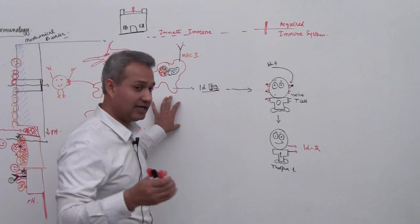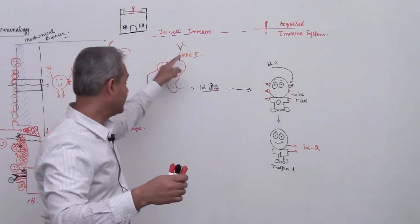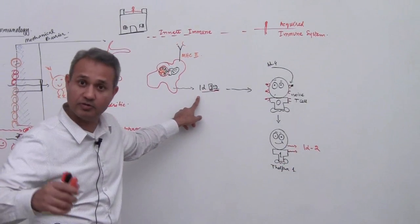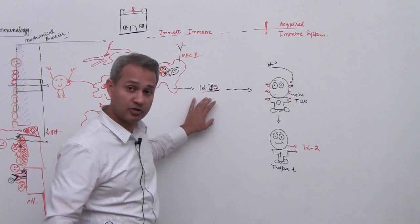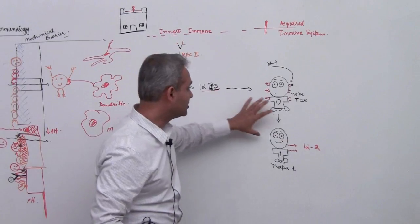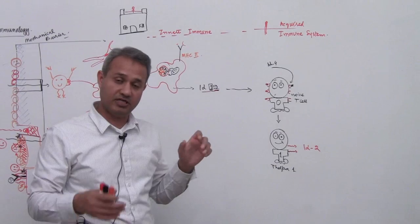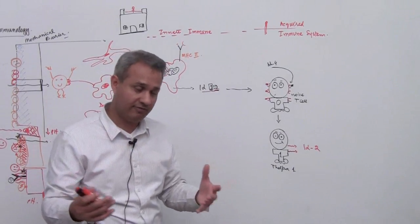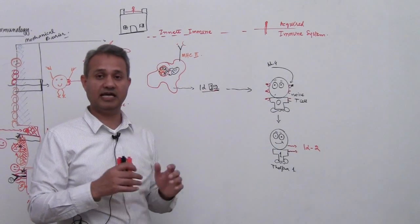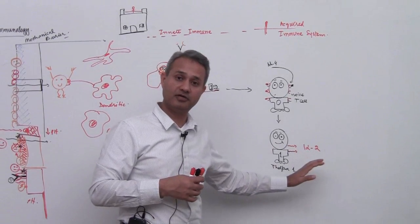What happened? Macrophage ate up the pathogen, he's showing that pathogen on the surface, he's running towards the lymph node taking this pathogen to say 'hey look what I got.' Meanwhile he's secreting IL-12, interleukin 12, that interleukin 12 separately via the blood or tissue fluids reached the lymph node. Over there we have naive T cells which are T helper 0, they have no idea what their function is.